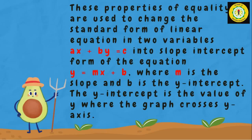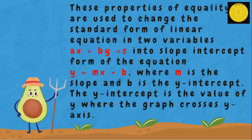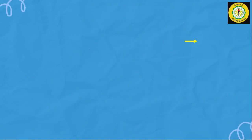These properties of equality are used to change the standard form of a linear equation ax plus by equals c into slope-intercept form y equals mx plus b, where m is the slope and b is the y-intercept. The y-intercept is the value of y where the graph crosses the y-axis. Let's take an example.